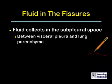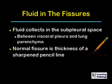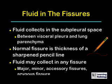Fluid in the fissure collects in the subpleural space usually, which is between the visceral pleura and the lung parenchyma. It could also collect between the layers of visceral pleura. Normally, the fissure will be the thickness of a line that you could draw with a sharpened pencil, and you can see the fissures in a normal individual's chest radiograph. However, when fluid collects in the fissure, it becomes much thicker. You can see this fluid in the major fissure, the minor fissure, accessory fissures, the azygous fissure — any fissure.